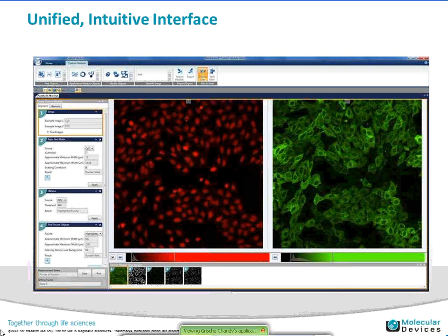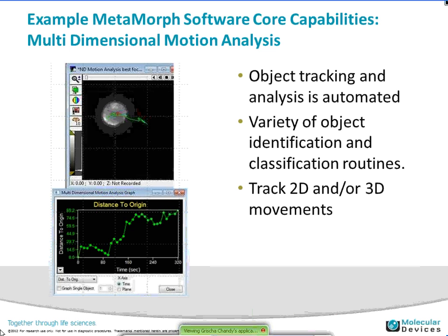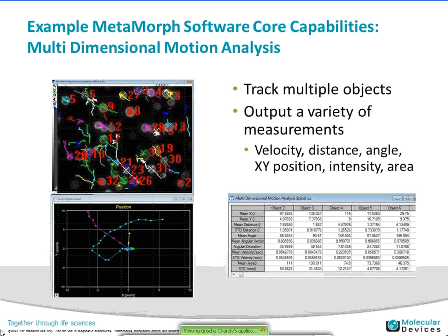Those are the application modules and custom modules used very frequently in screening, but you also have the full capabilities of MetaMorph behind the scenes. Allison is taking advantage of the Multidimensional Motion Analysis tool, which is within MetaMorph. This is a tool that allows object tracking and analysis in an automated fashion. A variety of object identification and computation routines can be used and it allows you to track 2D or 3D movements — mostly Allison will be talking about 3D. You can plot a cell's direction over time, and track multiple objects automatically, outputting measurements including velocity, distance, angle, position, intensity, and area.